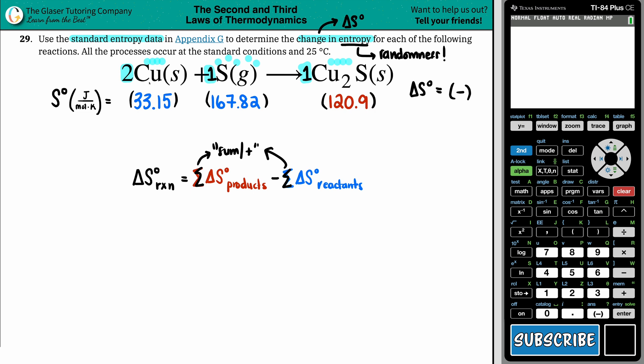So for example, since you have two coppers, I have to take the 33.15 and times it by two. Since there was only one sulfur, this number is just the same. But I just put it there just to show you guys. And the same thing for the Cu₂S. Since there was only one, it would be one times 120.9, but that would be the same number as well.